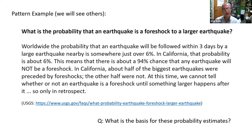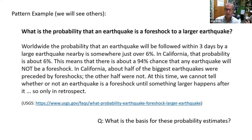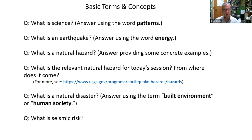But in California, about half of the biggest earthquakes were preceded by foreshocks, and the other half were not. At this time, we cannot tell whether or not an earthquake is a foreshock until something larger happens after it — we can only know in retrospect. Here's an example of several patterns that the US Geological Survey states on its website. The patterns that scientists discern are based on observation, typically rigorous observation. This will come in when we look at the Japan case historically.